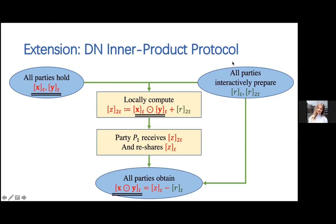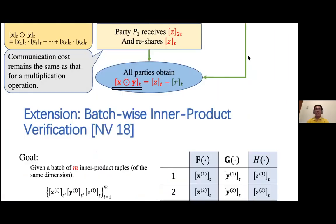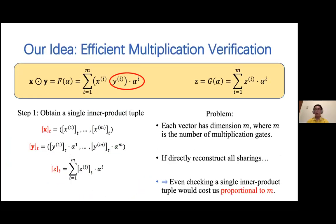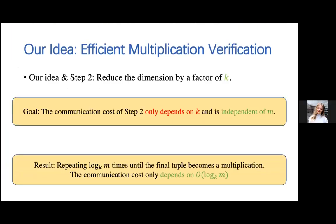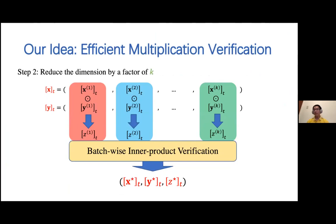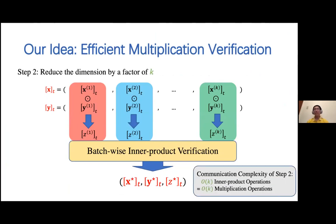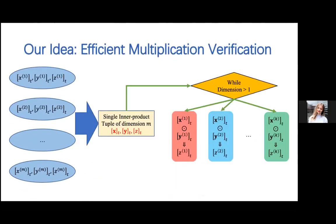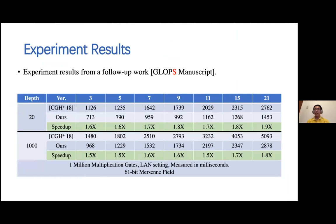[Question: You mentioned follow-up work. What do you guys do there?] The follow-up work makes further improvements to the DN protocol, independent of the verification protocol—trying to improve the semi-honest DN protocol. We reduced the communication cost from 5.5 elements to 4 elements per party per gate, and ran experiments to show that reducing the communication cost leads to shorter running times for the circuit.